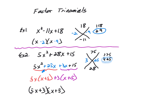Then I use grouping. The terms 5x squared plus 25x have a common factor of 5x, and factoring that out leaves x plus 5. Then 3x plus 15 has a common factor of 3, and factoring out 3 also leaves x plus 5. So in factored form it is (5x plus 3)(x plus 5). That's factoring trinomials when a is greater than 1, which also requires grouping.